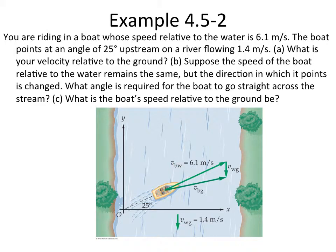Honestly, you can pick whatever subscripts you want. We've got a boat, we've got the ground, we've got water. You can call them whatever you want, but this has already been spelled out for us. What's a little more difficult is that we don't exactly have a perfect right triangle here, so we're going to have to do this in some parts.